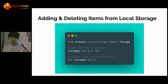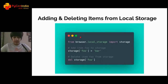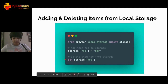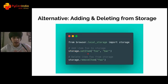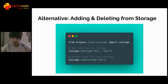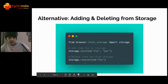With that, you've learned how to add and delete items from local storage — essentially half of what the random jokes generator does. There's also an alternative method: storage.setItem('foo', 'bar') sets the item with key 'foo' and value 'bar', and storage.removeItem('foo') removes it.